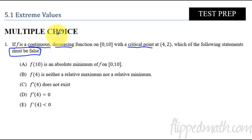Continuous meaning we're not going to have any breaks anywhere along the function. Decreasing meaning it's going down as you move left to right the whole time. We're going on the interval 0 to 10, so that's fine. And then critical point at (4,2). So if we have a critical point at this coordinate point, that means either the derivative at 4 has to equal 0, or the derivative at 4 does not exist. So one of those two things is going to have to be true in order for this to happen.